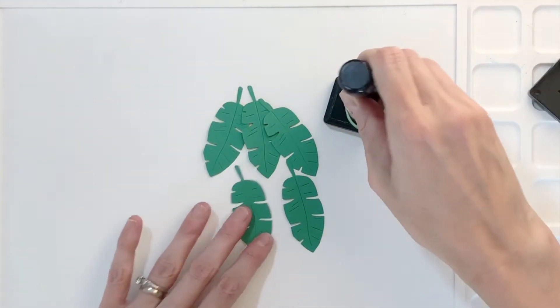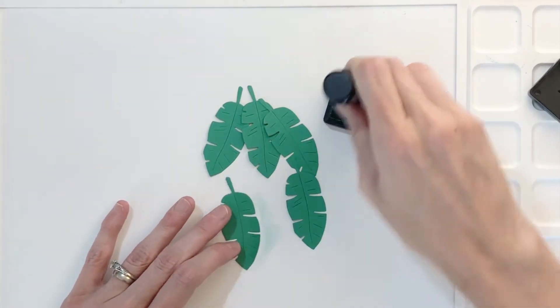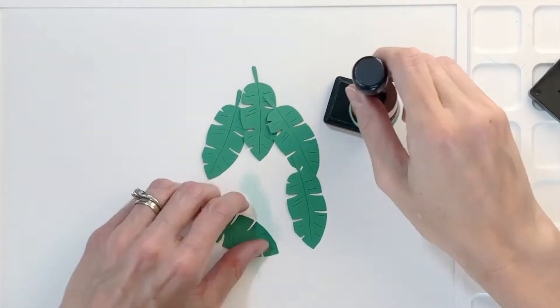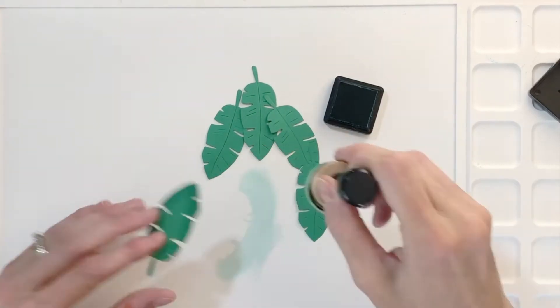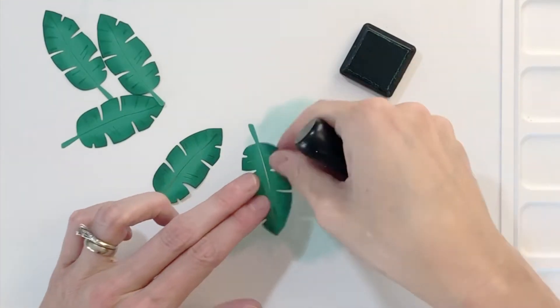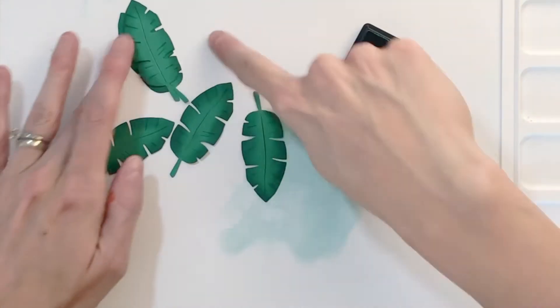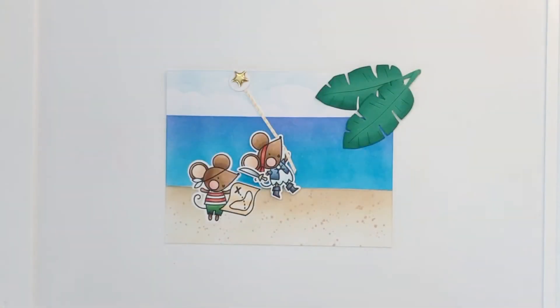So now I went ahead and die cut five leaves out of some green cardstock using a leaf die from the Greenery die set. And now ink blending the very edges of these leaves with the Pine Needles distress ink. And this just kind of makes the leaves look a little bit more realistic.